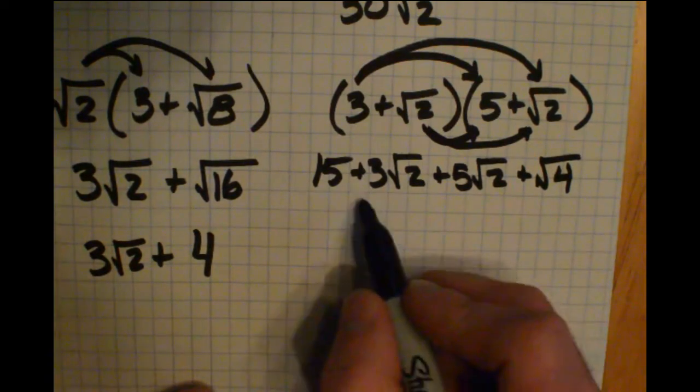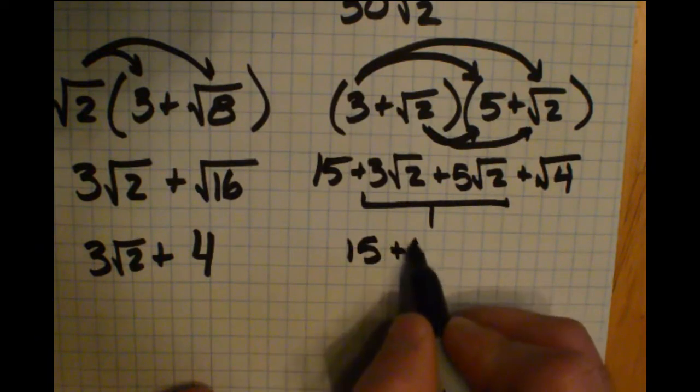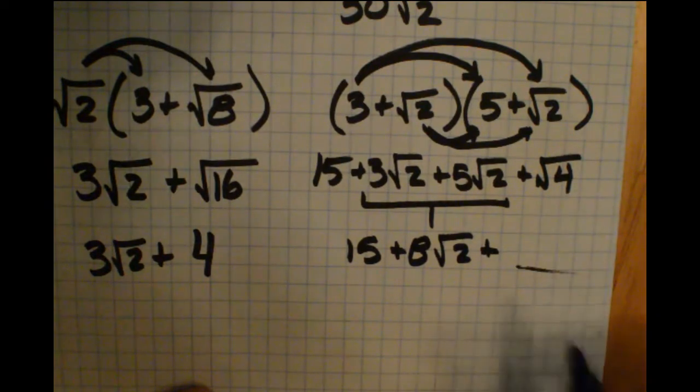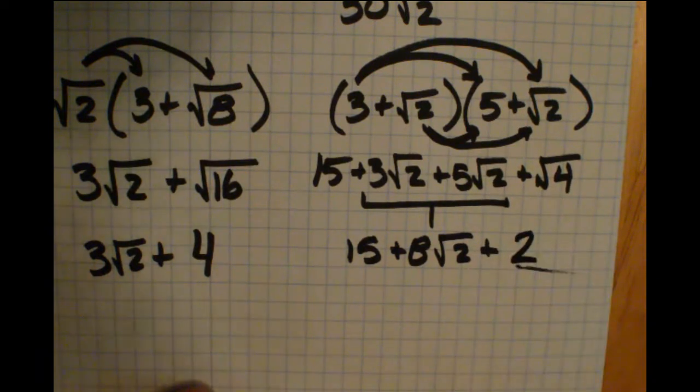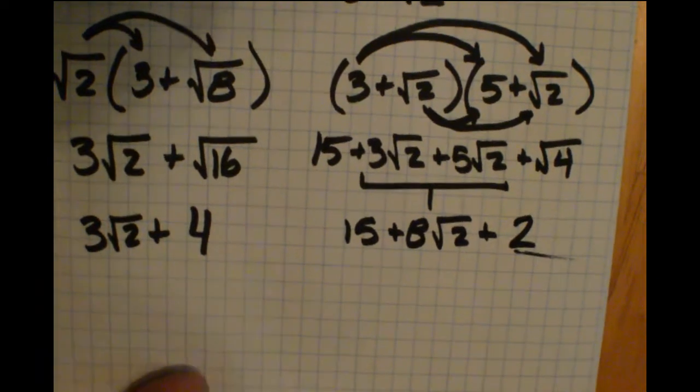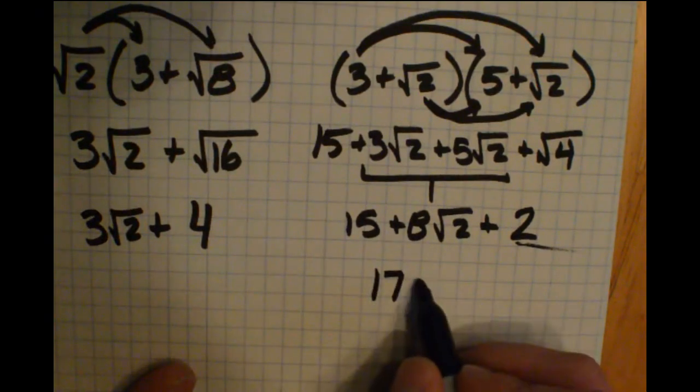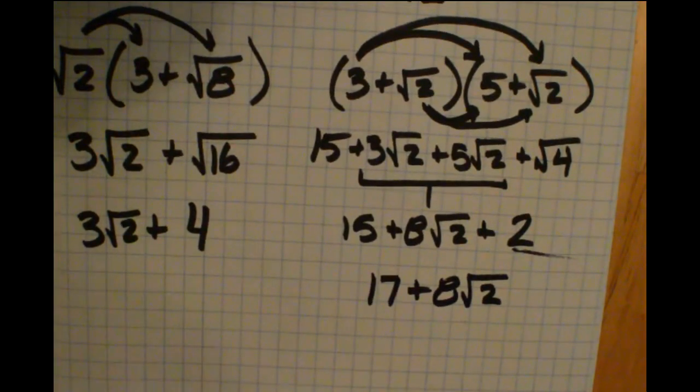Let's combine the like terms. These two in the middle can be combined, so we have 15 plus 8 radical 2 plus... Let's see if we can simplify this. The square root of 4 is a perfect square, just 2. Now we have 15 and 2. Let's combine those together to get 17. So all together this simplifies to 17 plus 8 radical 2.